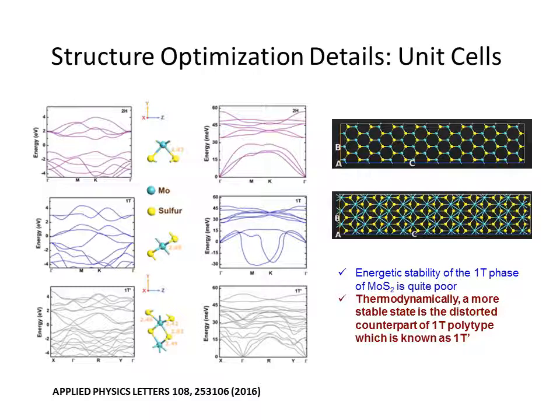However, metastable 1T phase may further relax to a much lower energy state simply by redefining its lattice vectors. This distorted 1T MoS2 is actually the 1T' phase of monolayer MoS2 for which the relative energetic stability is greatly improved.